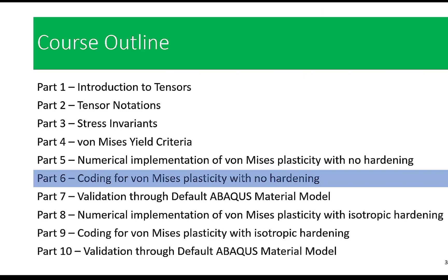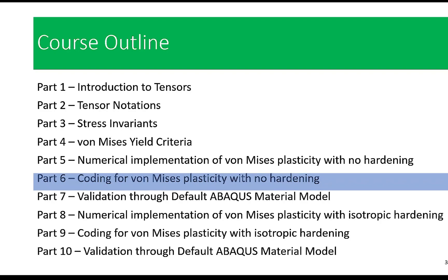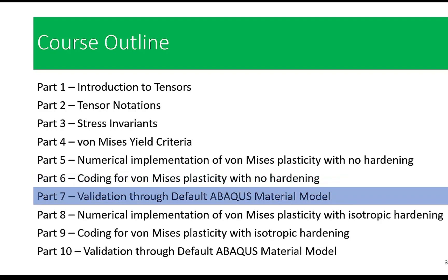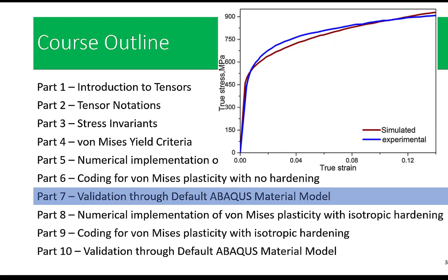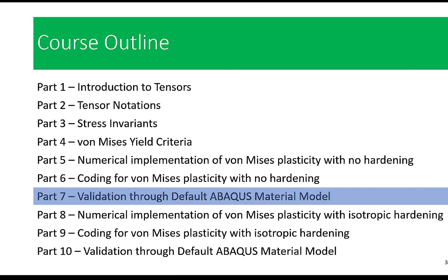By the end of this section, you will have a solid understanding of how to implement this in Abaqus. Part seven is all about validation. We will rigorously test our implementation by comparing it with the default Abaqus material model. This step ensures that our custom implementation is accurate and reliable.